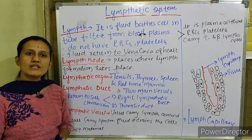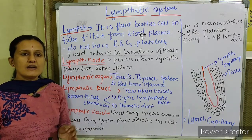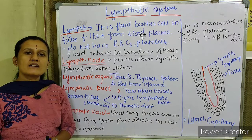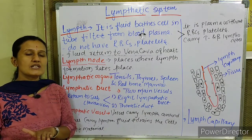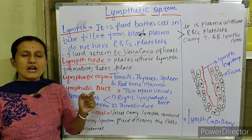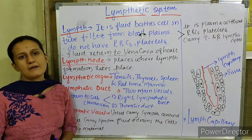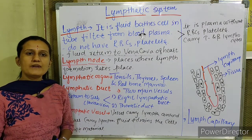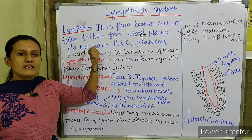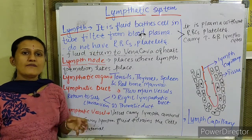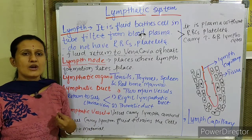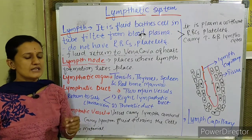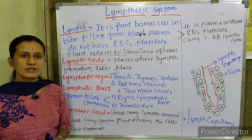Lymph is an extracellular, yellowish or straw-colored fluid — it is a fluid connective tissue, similar to blood. It is a colorless to whitish-colored liquid. Lymph contains WBCs, some proteins, fat globules, some food material, organic and inorganic substances, other waste material, and gases. It only does not contain RBCs, platelets, and some proteins — those are absent in lymph.